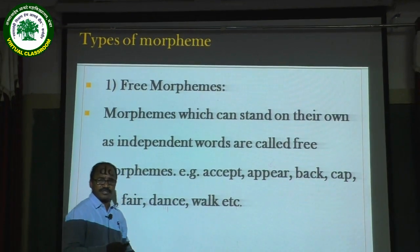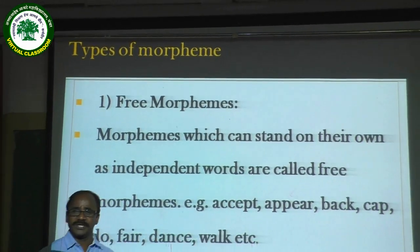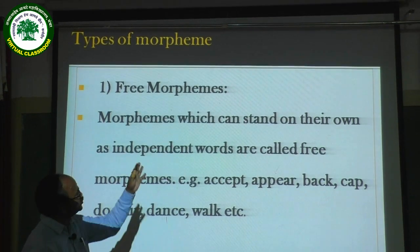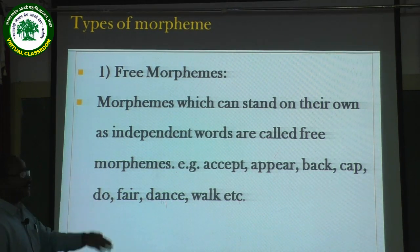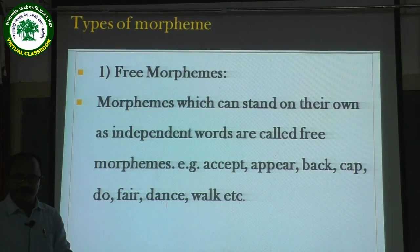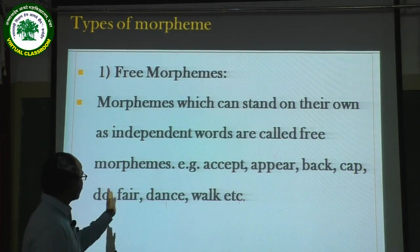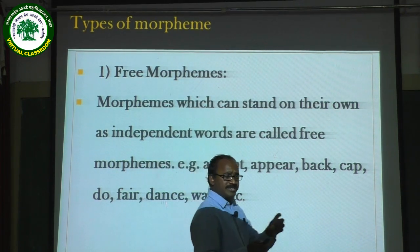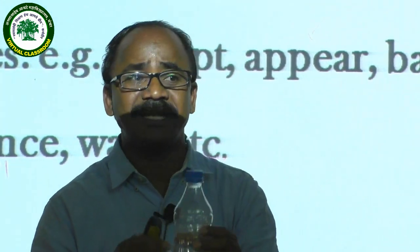There are different types of morphemes. A morpheme is the smallest meaningful unit in a language. Morphemes have three types: the first is the free morpheme, the second is the bound morpheme, and the last is the zero morpheme. A free morpheme is one which can stand by itself or which has its own independent meaning — it is a lexical item. Words like 'accept,' 'appear,' 'back,' 'cap,' 'fair,' 'dance,' 'walk' — any item which can stand by itself is called a free morpheme.